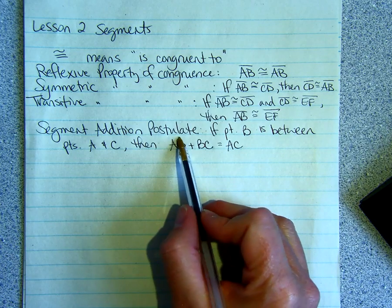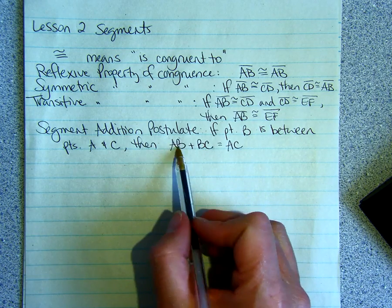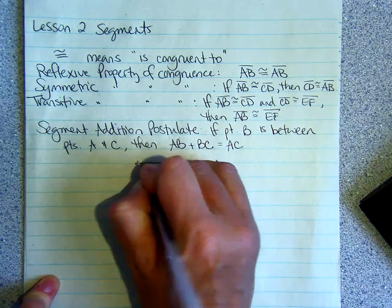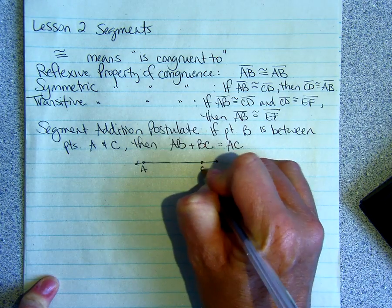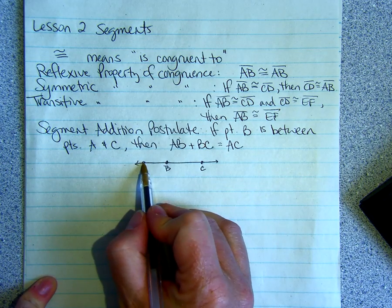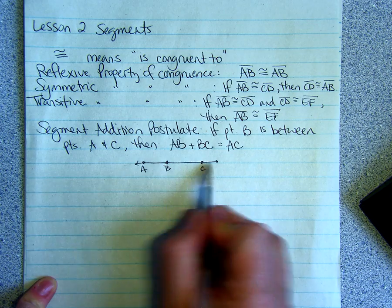And if you remember, if we don't put the overbar, that means length. So the length of AB plus the length of BC equals AC. And a picture would be here's points A and C. And if point B is between, then we know this length here plus this length here will give you the length of the whole thing.